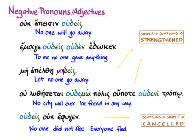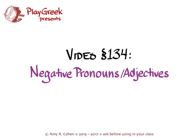So those are some examples of how to use your new negative pronouns and negative adjectives in Greek, and also a little bit of an introduction to the varieties of ways that you can use more than one negative in a sentence. You'll get to read lots of examples in your sentences in Hanson and Quinn.